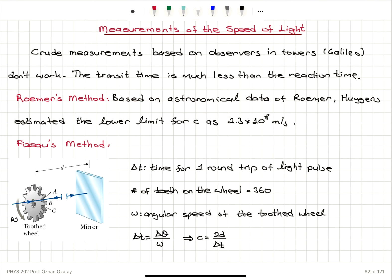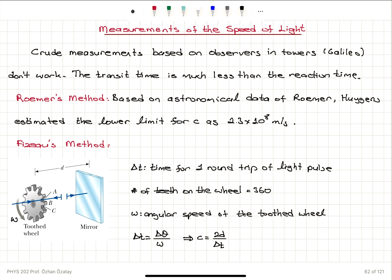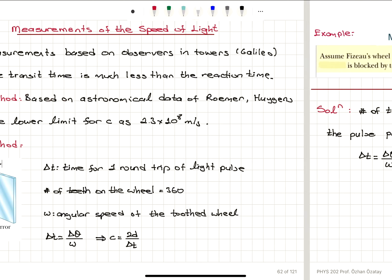Early measurements for the speed of light failed. Galileo's experiment placing observers in towers failed because the transit time of light was much less than the reaction time. Römer's method gave an estimation; Huygens used Römer's astronomical data to estimate the speed of light. Fizeau's method uses a tooth wheel rotating at angular speed omega — light pulses are sent through the openings at distance D to a mirror, and the reflected light is observed. From the angular displacement divided by omega, the transit time is found, and the speed of light is calculated from the total travel distance.